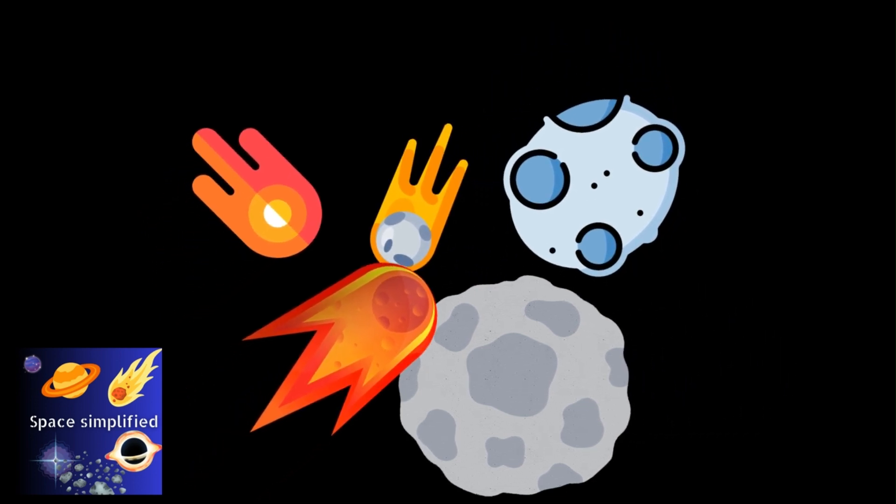According to the disk instability theory, the protoplanetary disk can become unstable due to differences in temperature or density. These instabilities can cause small pockets of gas and dust to collapse under their own gravity, forming dense clumps that can grow into planets. These clumps can either form directly into planets or first form smaller planetesimals that later accrete more material and grow into planets.